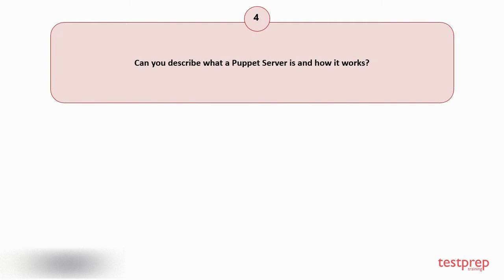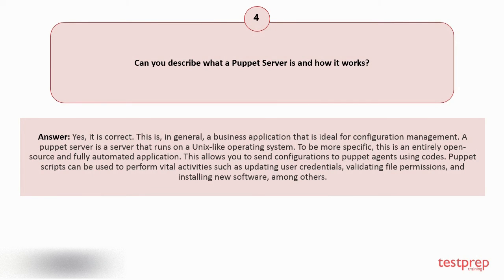Question number 4: Can you describe what a puppet server is and how it works? In general, it is a business application that is ideal for configuration management. A puppet server is a server that runs on a Unix-like operating system. More specifically, it is an entirely open source and fully automated application. This allows you to send configurations to puppet agents using code. Puppet scripts can be used to perform vital activities such as updating user credentials, validating file permissions, and installing new software, among others.